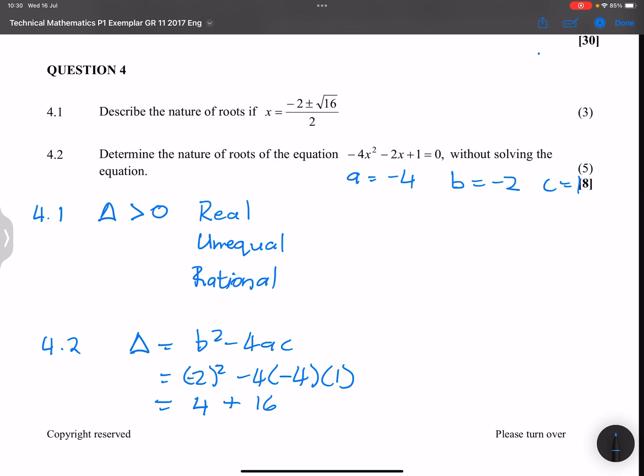Delta is equal to 20. So what do we note? That's a positive number, so we've got roots that are real. Roots are real.